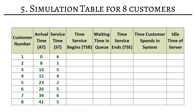The next step is to calculate the simulation table for 8 customers. It has the following columns: customer number, arrival time, service time, time service begins, waiting time in queue, time service ends, time customer spent in the system, and idle time of the server.